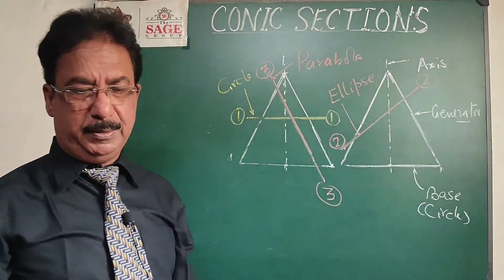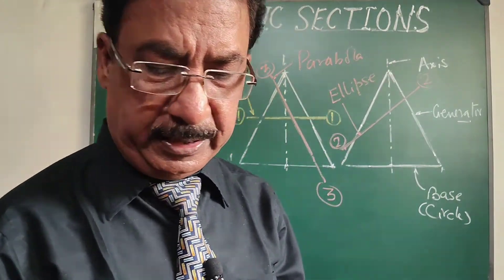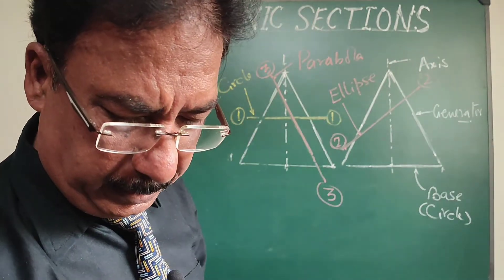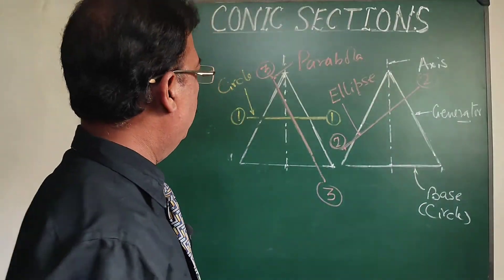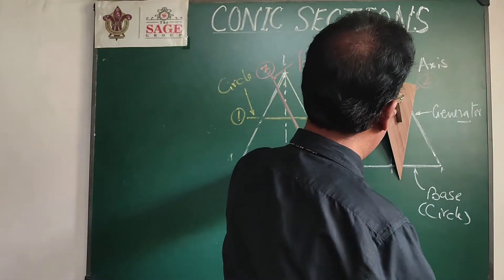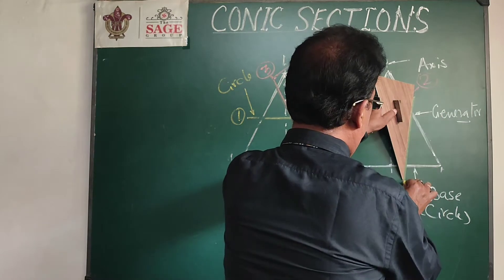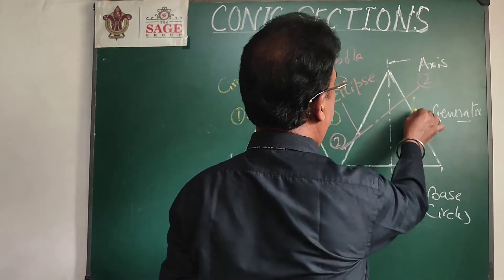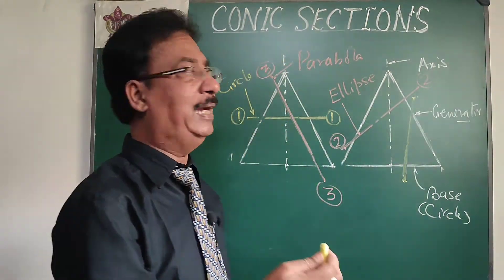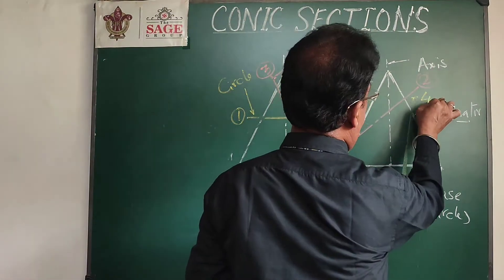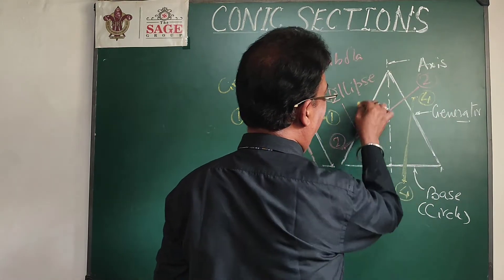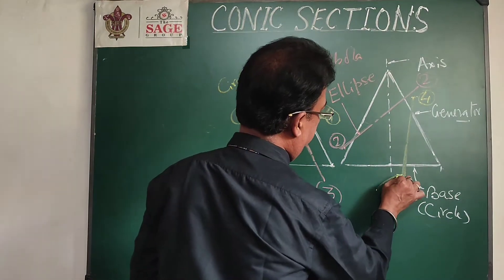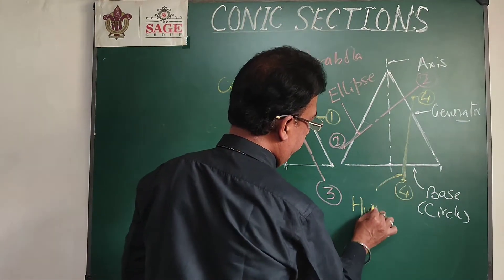All these curves are mathematical curves studied in mathematics. Another option is plane number four, again inclined to the base, cutting the base on one side of the axis. This time it is not parallel to the generator but it cuts the base also, and the section obtained will be a hyperbola.